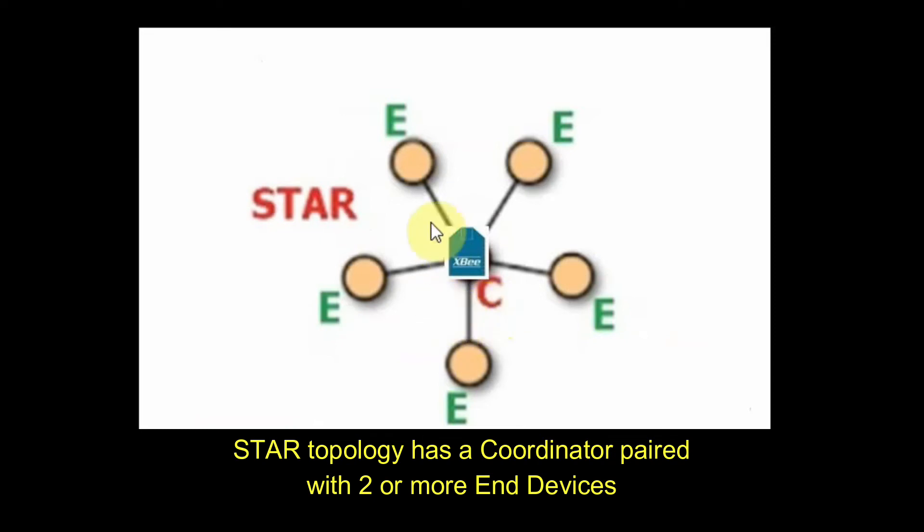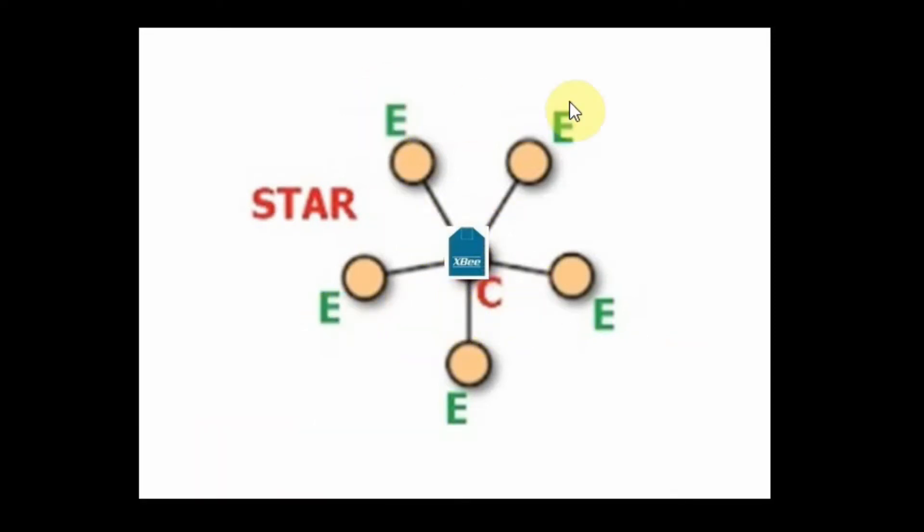The next one is the STAR topology which consists of a coordinator that is paired with two or more end devices. Since endpoints can talk only to their parent, all endpoints are directly paired with central coordinator.